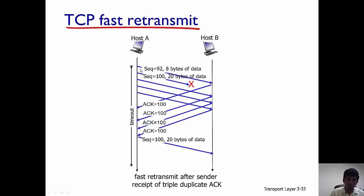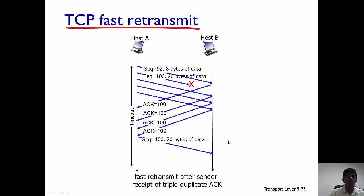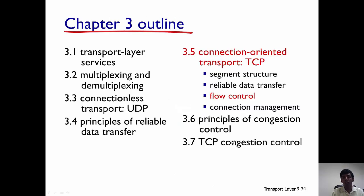So A does not wait for the timer to expire. It sends the segment with sequence number 100 and 20 bytes of data to B. Even though the timer did not expire, because A received three duplicate acknowledgements, it sends the missing segment to B. This is fast retransmit. With this, I'll conclude this segment, and in the next lectures we'll talk about flow control and connection management.